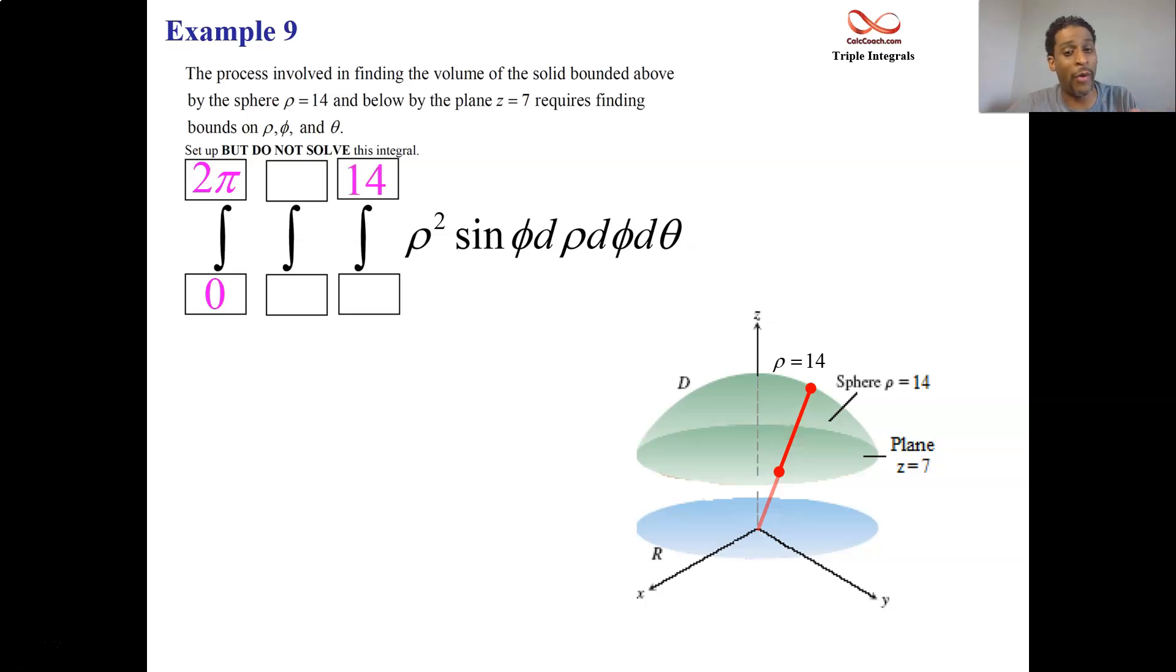The lower bound on rho, however, comes from the plane. And that plane has equation z equals 7. So to get the lower rho, we're going to have to deal with converting the equation z equals 7 into an equation for rho.